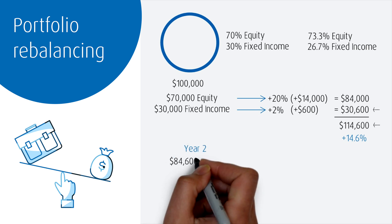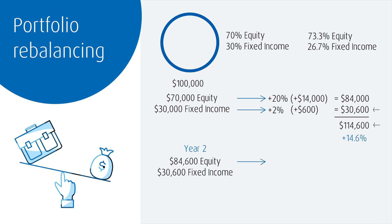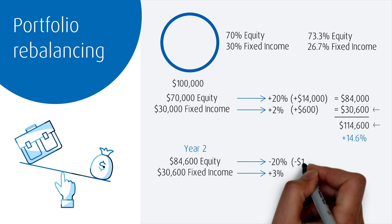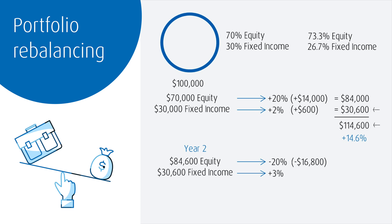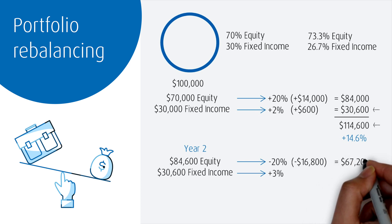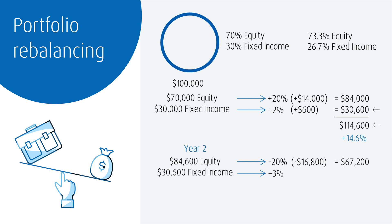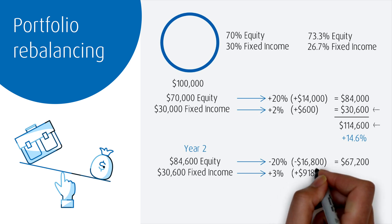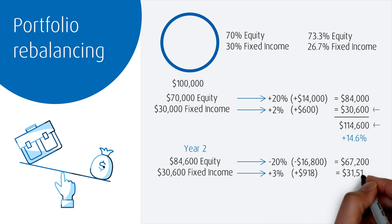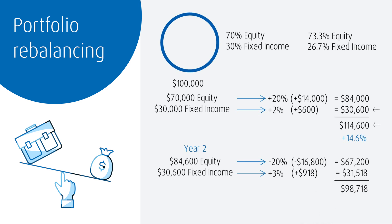Because markets and asset classes tend to move in cycles, perhaps the next year equities lose 20% and fixed income earns 3%. For our equities, we take $84,000 and subtract 20%, which is $16,800, to give us $67,200. For our fixed income, we take $30,600 and add 3%, which is $918, to give us $31,518. Our new portfolio value without rebalancing is $98,718.